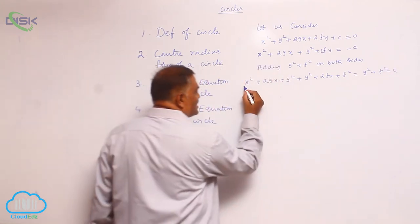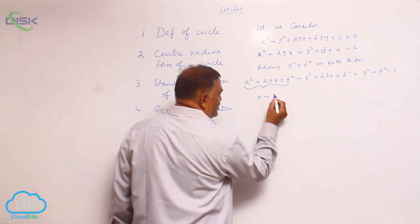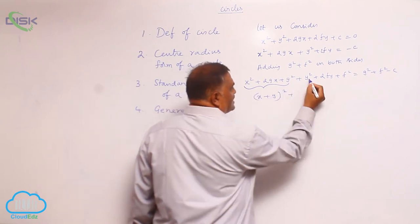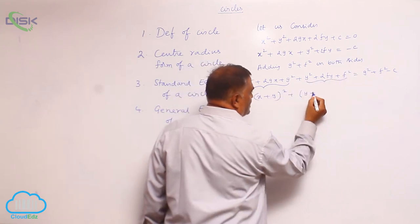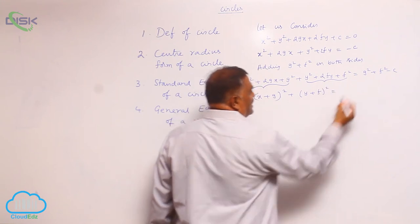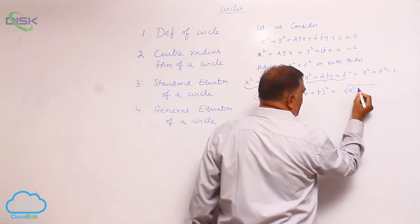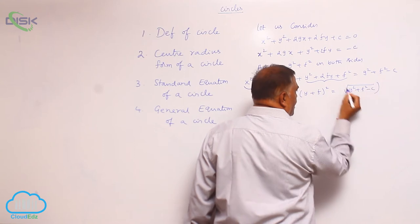Now, this can be written as x plus g whole square. This can be written as y plus f whole square. This can be written as g square plus f square minus c whole square.